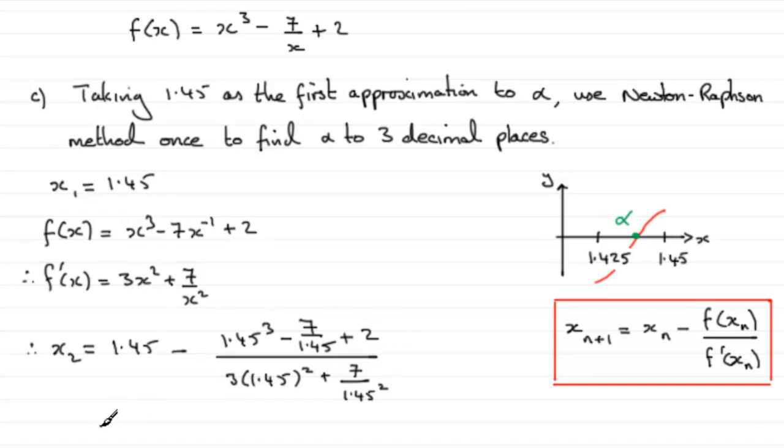what you end up with is 1.42706 and so on, which when rounded to three decimal places is going to equal 1.427 to 3 decimal places. And there you have it.